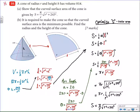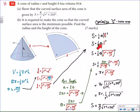Just a quick summary. The reason why this is slightly more challenging than your typical optimization problem is usually we can just do one substitution and be able to go into our optimization formula and get it all in terms of two variables — the one we're trying to optimize plus an independent variable. In this case, we needed to use multiple parts of the geometry in order to get both theta and slant height in terms of r, the radius.